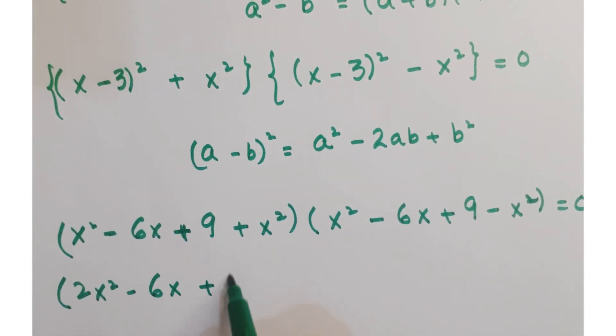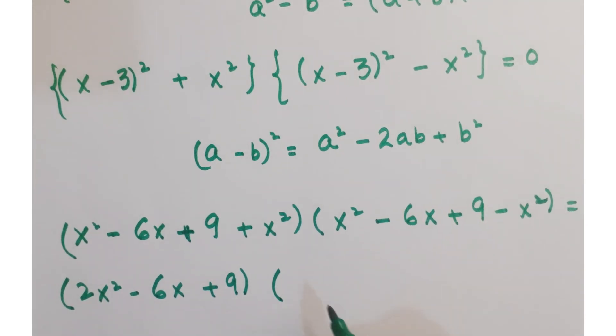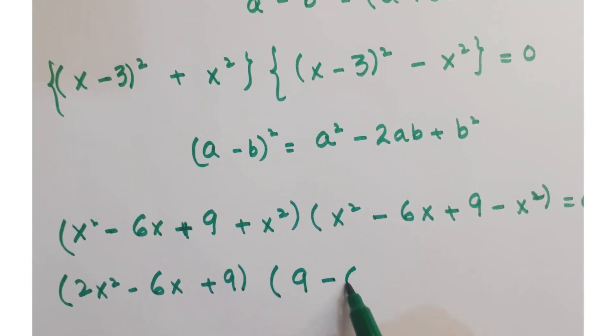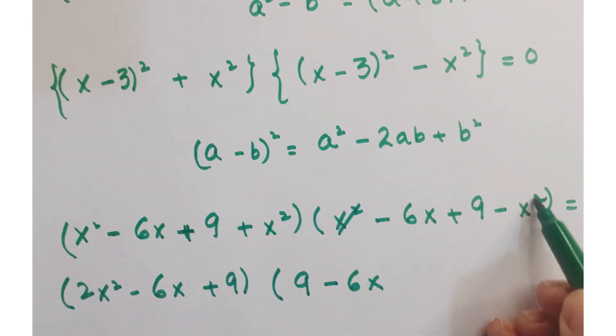Just add these two quadratic terms: 2x square minus 6x plus 9 and here you get 9 minus 6x because this and this get cancelled.